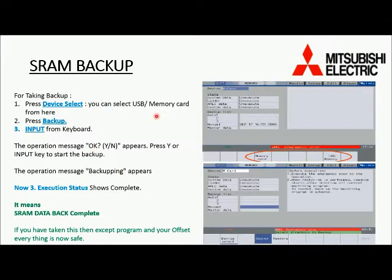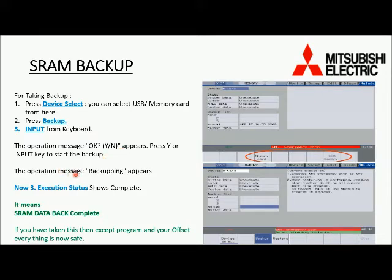To take the backup: first, press device select — you can select USB or memory card from here. Second, press backup. Third, after selecting the desired device, confirm input from the keyboard. Then the operation message OK appears with Y or N. Press Y and the input key to start the backup. The operation message backup complete appears when execution status shows complete.